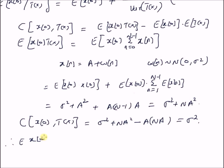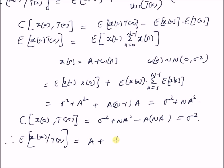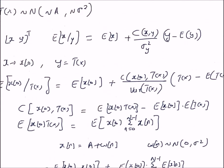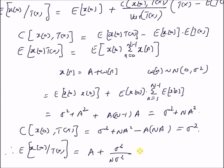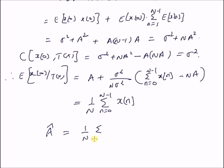Therefore, the conditional expectation of X(0) given T(x) equals E[X(0)] = A, plus sigma^2 divided by the variance of T(x) which is N*sigma^2, multiplied by (sum_{n=0}^{N-1} x(n) - N*A). Upon simplification, this equals 1/N * sum_{n=0}^{N-1} x(n), since the A terms cancel. Therefore, the optimal estimator A-hat = (1/N) * sum_{n=0}^{N-1} x(n), which is also the maximum likelihood estimate and the MVU, that is minimum variance unbiased estimator, derived from the sufficient statistic.